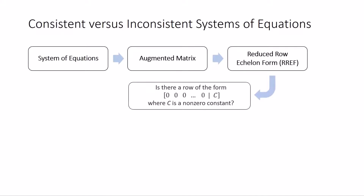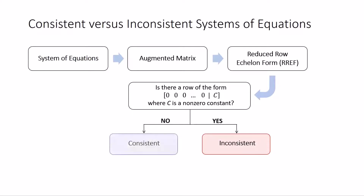Next, check if any of the rows is in the following form where all the row's entries corresponding to the coefficients are zeros, but the row's entry corresponding to the constant is non-zero. If the answer is yes, then the system is inconsistent. If the answer is no, then the system is consistent.